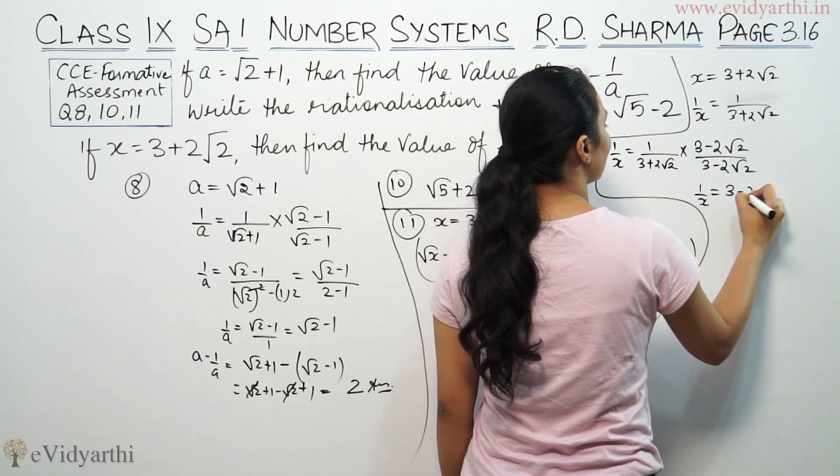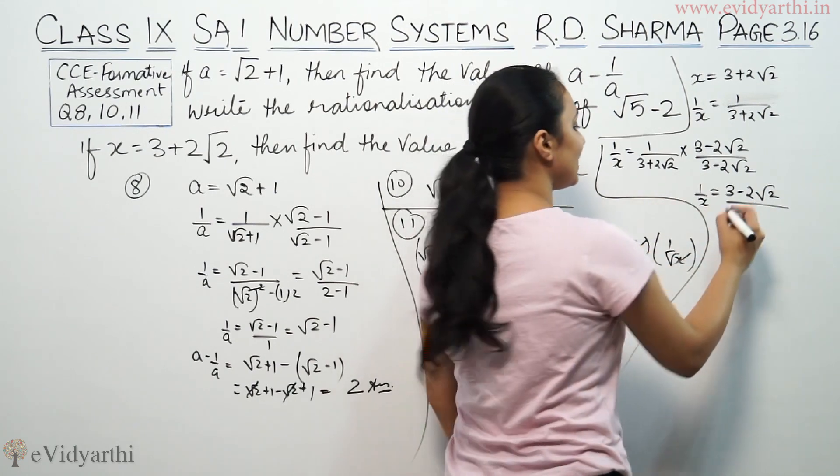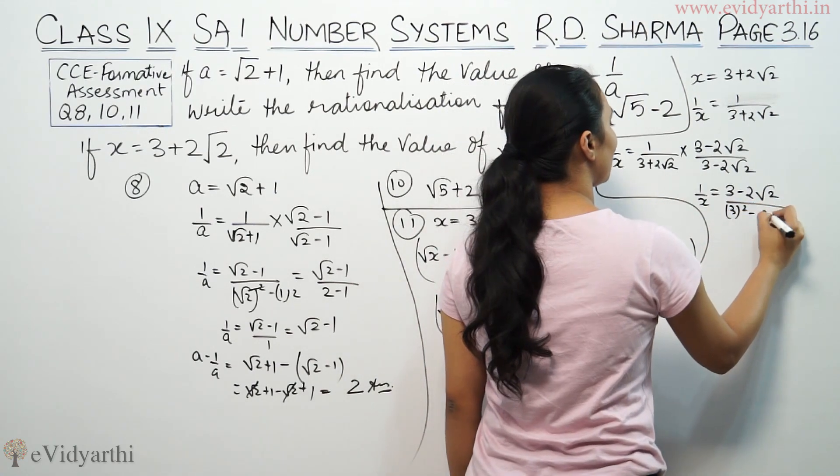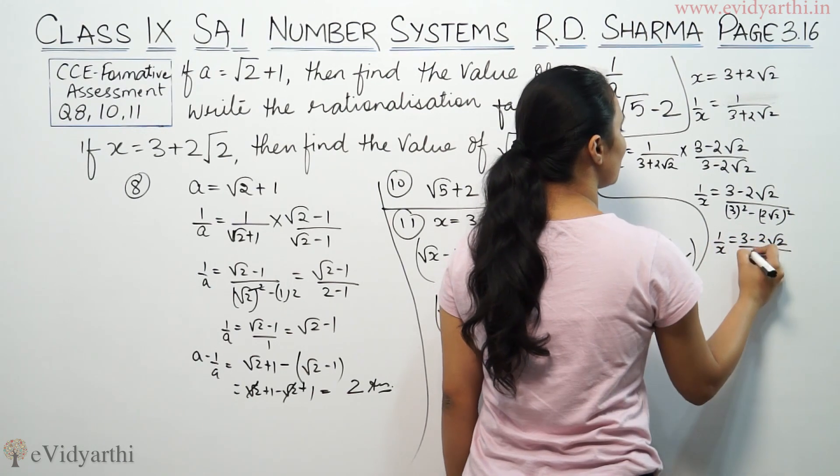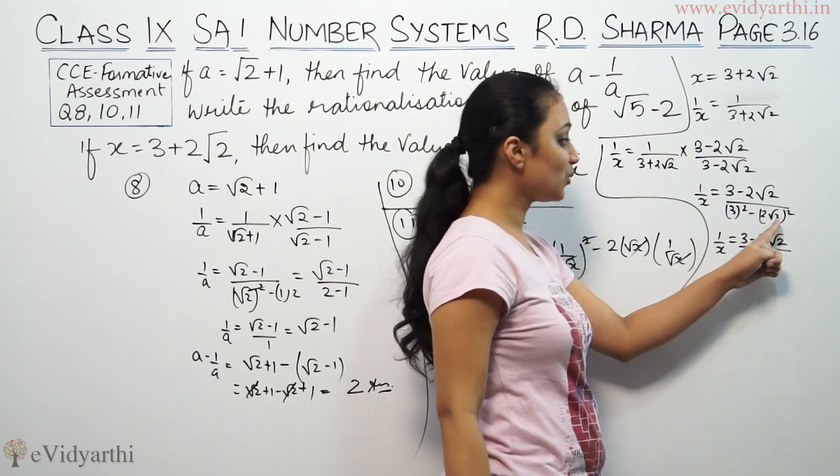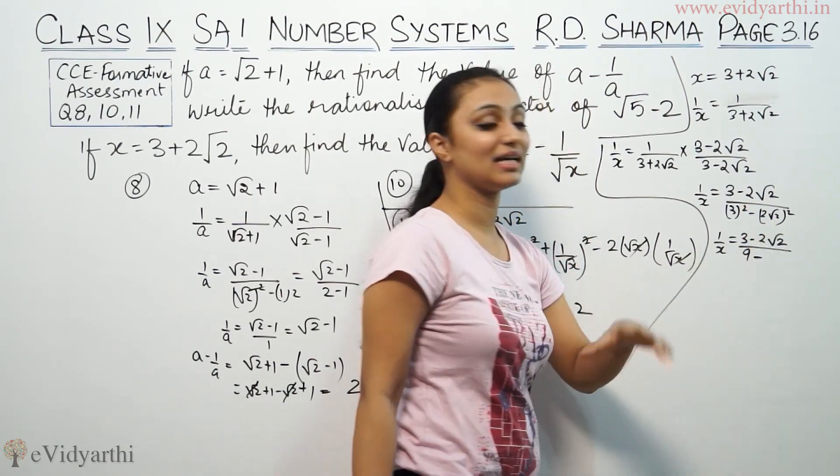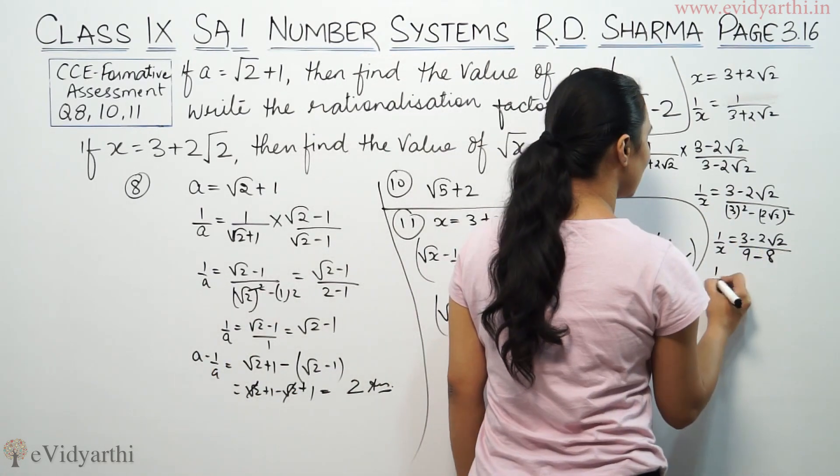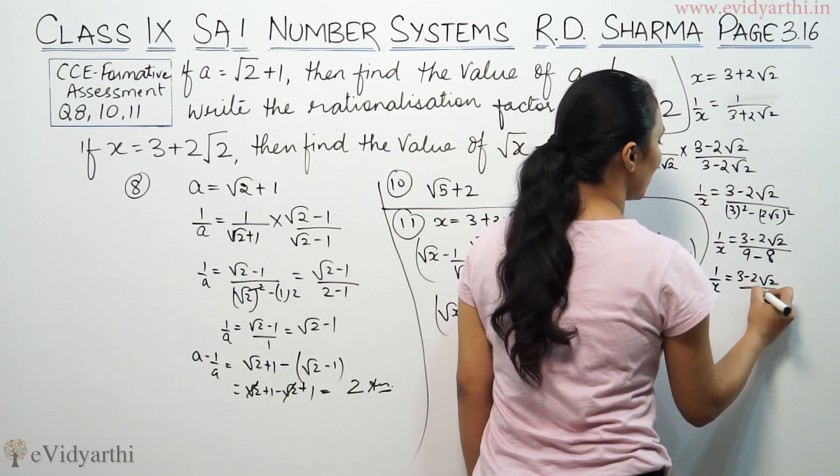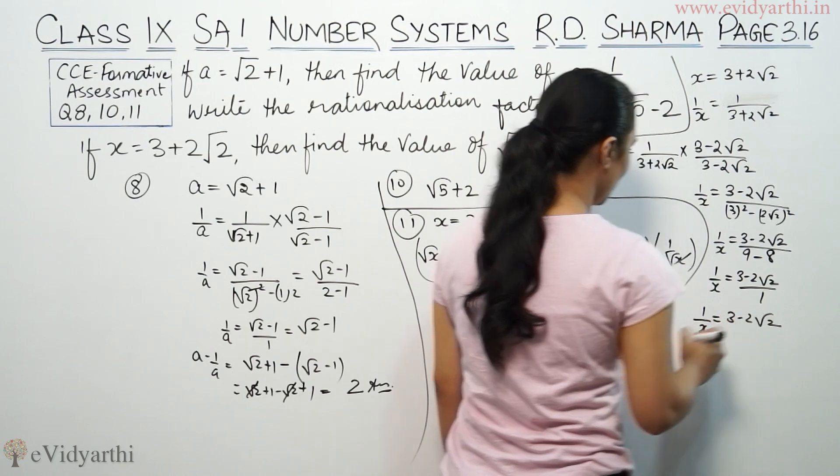So 1 by x becomes 3 minus 2 root 2 over a plus b, a minus b, that means a square minus b square. So 1 by x will be 3 minus 2 root 2 by 9 minus 8, since 2 root 2 squared is 8. So 1 by x is 3 minus 2 root 2 by 1, that means 3 minus 2 root 2.